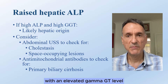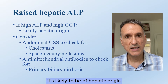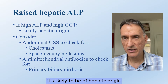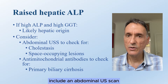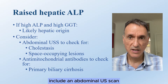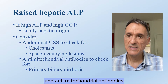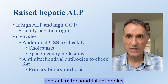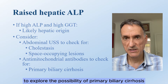If alkaline phosphatase is raised with an elevated gamma GT level, it is likely to be of hepatic origin. Further steps include an abdominal ultrasound scan to check for cholestasis and hepatic space-occupying lesions, and antimitochondrial antibodies to explore the possibility of primary biliary cirrhosis.